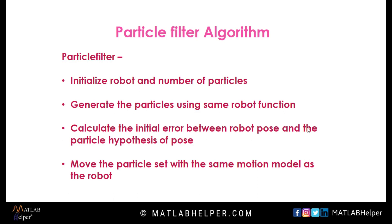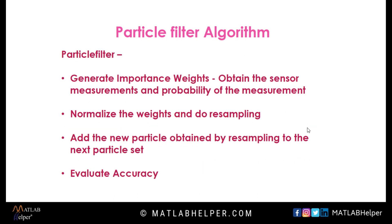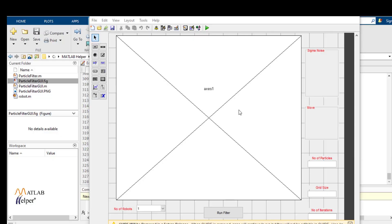Then the scatter plot is done for each particle. The robot and particles are made to move with the move command, and the sense command obtains the distances to the four landmarks. Then the measurement probability is calculated as described earlier. The result is normalized to obtain importance weights for each particle. The process of resampling is done — more details about the resampling can be found in the blog. The interested viewer can refer to Probabilistic Robotics by Sebastian Thrun for details on the theory.